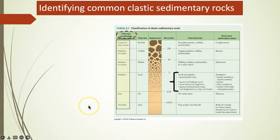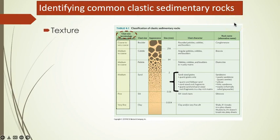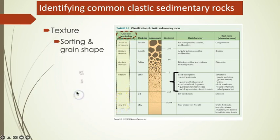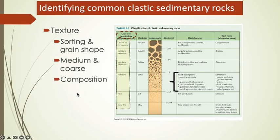The primary criteria used in naming clastic sedimentary rocks is texture — more specifically, the size of the clasts or grains that make up the rock. Sorting and grain size are also used to name medium and coarse grain rocks. Composition is also used as a criteria when identifying different types of sandstone.